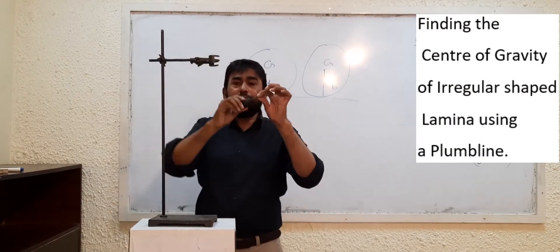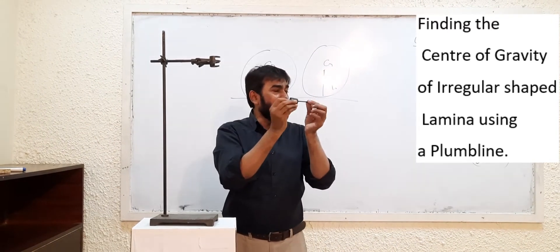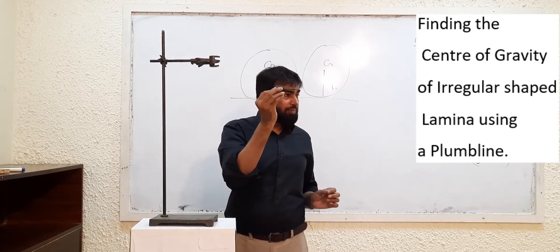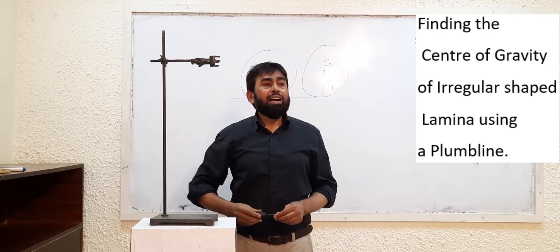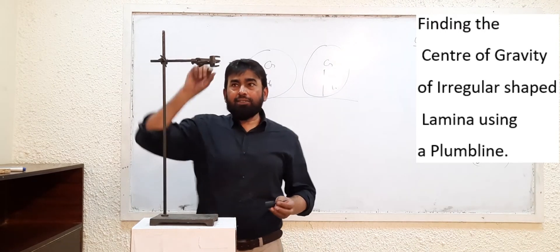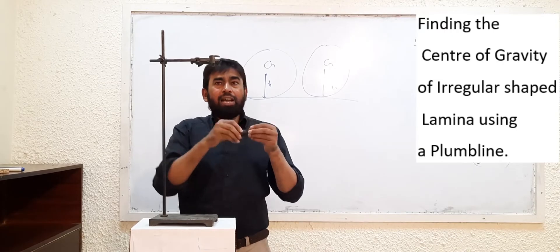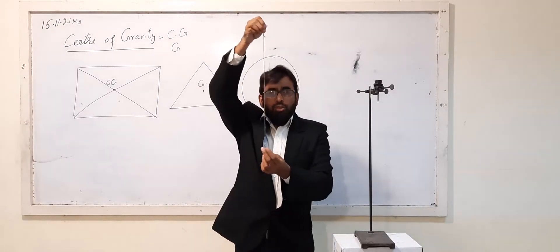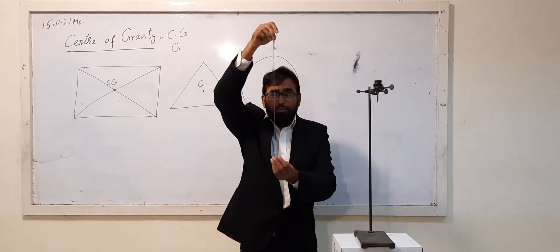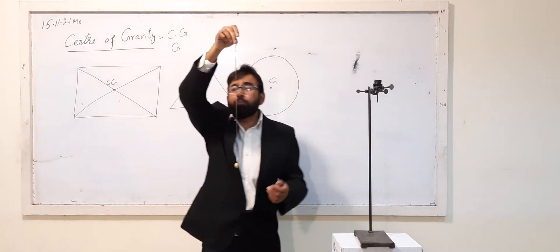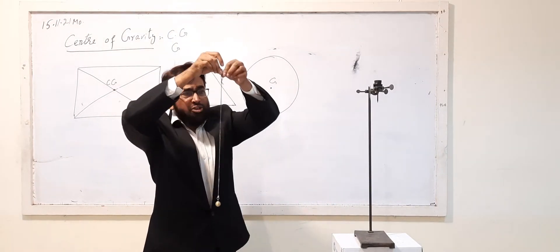Here you can see I have a stand, a cork, and a needle or nail. I also have a pendulum bob — you can also use a plumb line. We normally use a plumb line for this type of experiment.